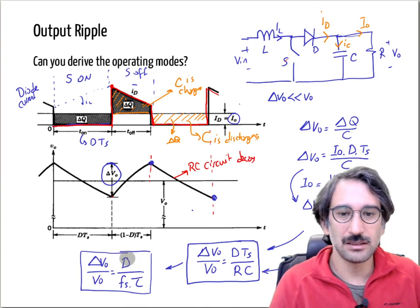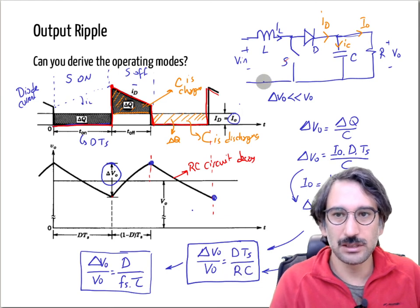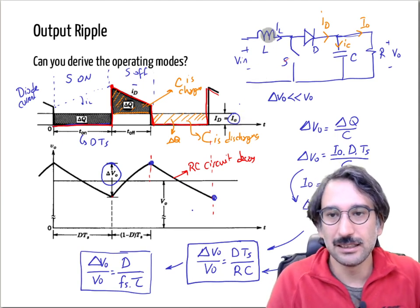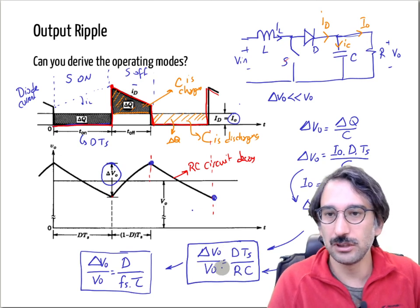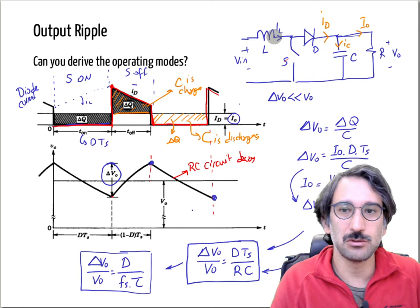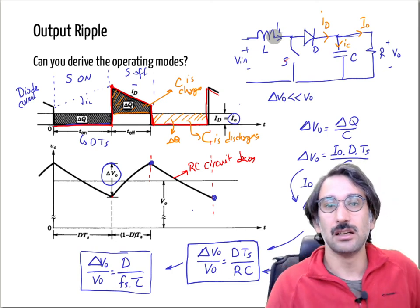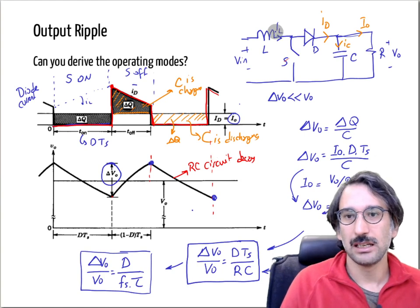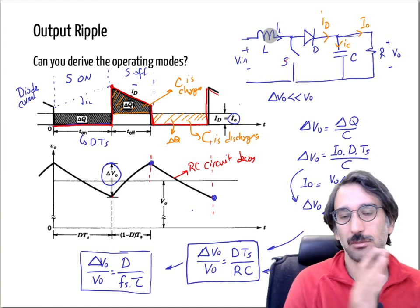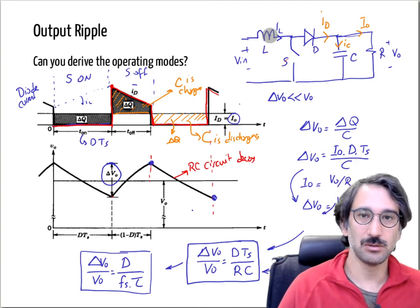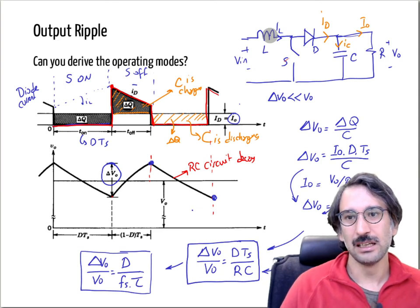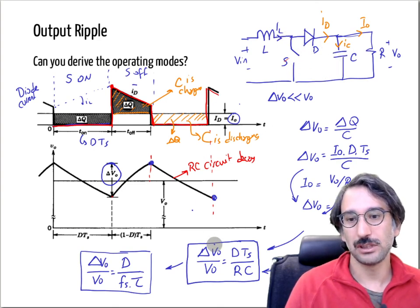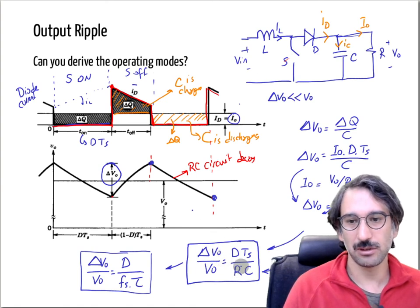An interesting observation: there is no term related to L in this equation, so the inductance has no direct effect on the output voltage ripple. However, this doesn't mean you can choose a minimum inductor size, because L determines the operating mode — specifically, when the converter enters discontinuous conduction mode. So indirectly, L does affect the calculation.